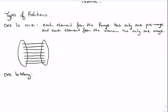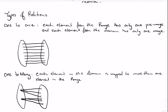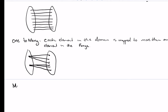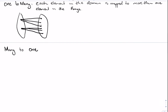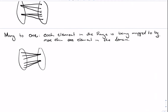Then we have what we call a one-to-many relation — each element from the domain is mapped to more than one element in the range. Then we look at many-to-one, which means more than one element in the domain is mapped to the same element in the range; that is, each element in the range is being mapped to by more than one element from the domain.